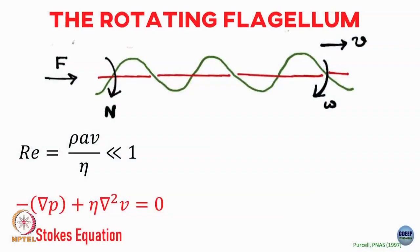Once you take this low Reynolds number — Reynolds number much much less than 1 — the governing equation is the Stokes equation, where the force is going to be linearly related to the velocity. So what we can do is write down a relation between this force and the velocity and the angular velocity.